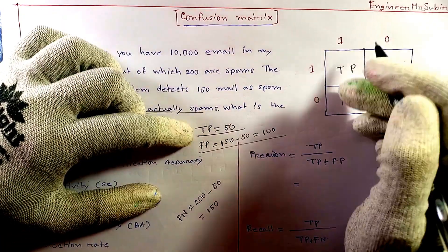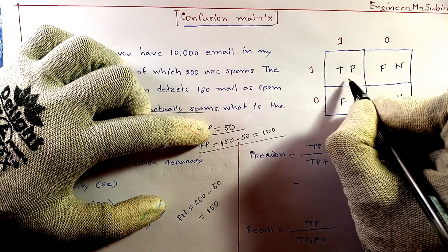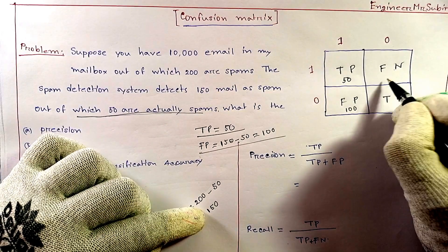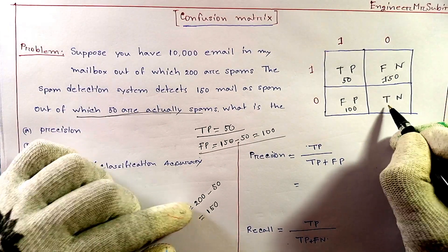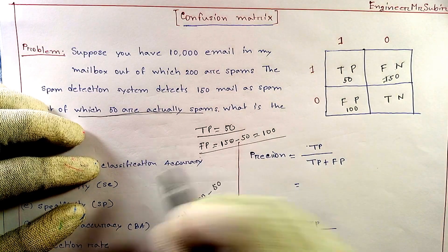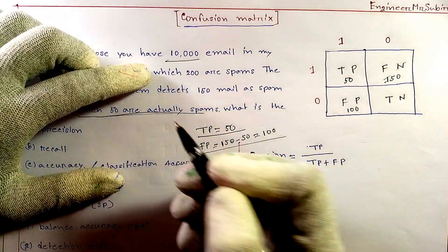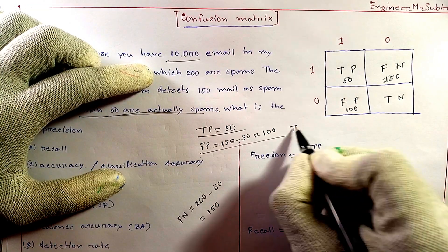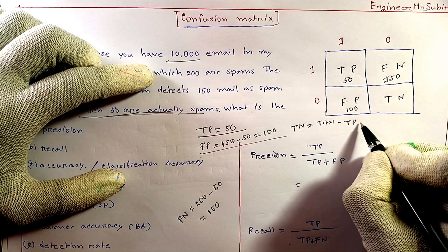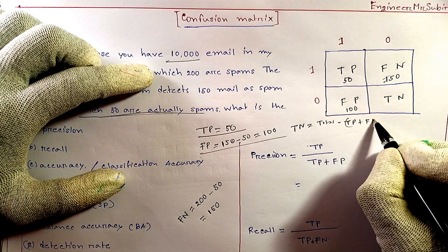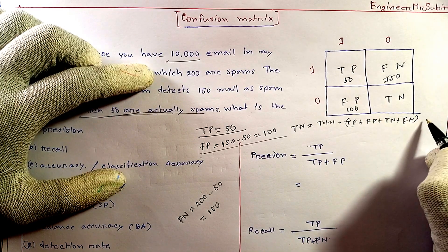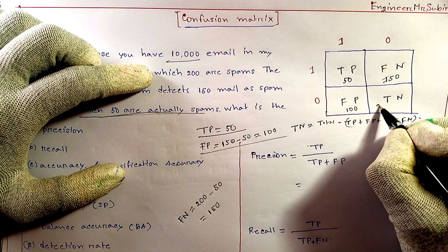So let me put the values: TP equals 50, FP equals 100, FN equals 150. Now for TN — we take the total and subtract TP plus FP plus FN. So TN equals total minus (TP plus FP plus FN), and the value will be 9,550.